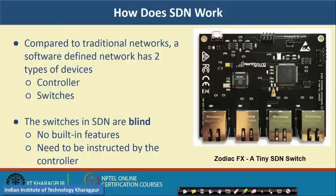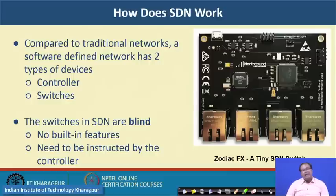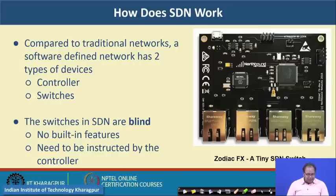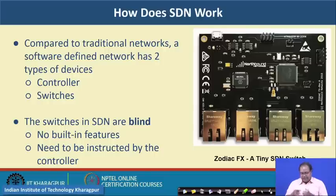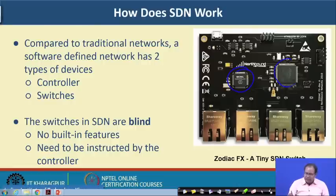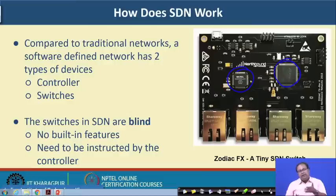Here is a brief idea of how SDN works. Compared to the traditional network, a software defined network has two types of devices: the controller, which is the brain of the network, and the switches, which are hardware devices — dumb switches that do not have any logic built inside them and need to be instructed by the controller. For example, the Zodiac FX switch is a tiny SDN switch with 4 interfaces and TCAM hardware, along with a microcontroller. Whatever routing logic is needed will be instructed by the controller itself.